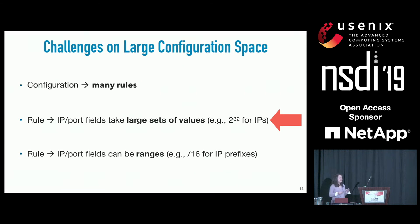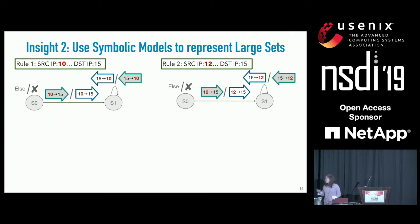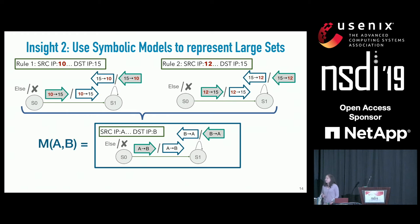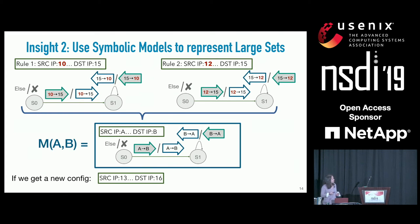Suppose two rules differ only in the concrete value used for source IP—one uses 10 and the other uses 12. The resulting models are logically identical except for the concrete source IP value. This suggests we can learn a symbolic model by abstracting away the IP and port fields. Once we get a new config, we just substitute the corresponding values into our symbolic model, eliminating the need to infer the model for the entire IP/port space.